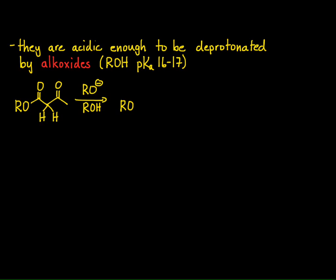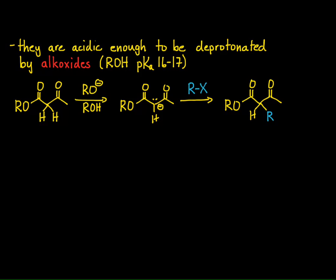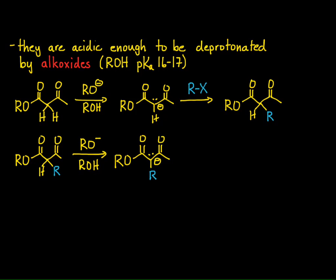The alkoxide removes a proton from the alpha carbon in the middle, and we generate our enolate. Now we can take that enolate and react it with an alkyl halide to undergo a substitution reaction. Notice in this example there's still an alpha hydrogen remaining, so we could take that alkylated product, react it with another equivalent of alkoxide to remove that second proton, form the enolate again, and react that enolate with a different alkyl halide — getting a dialkylation with two different R groups.